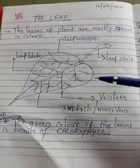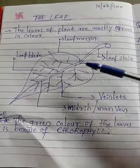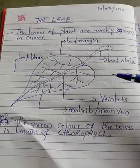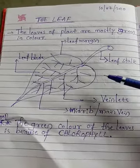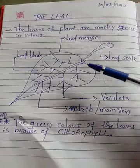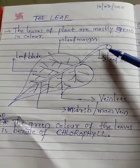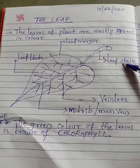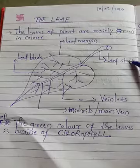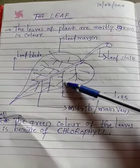Look here students — this is a diagram of a leaf with the parts already labeled. This is the leaf stalk; we call this one the leaf stalk.